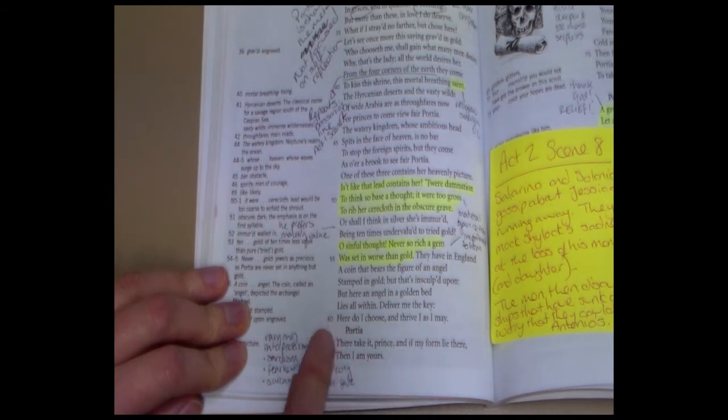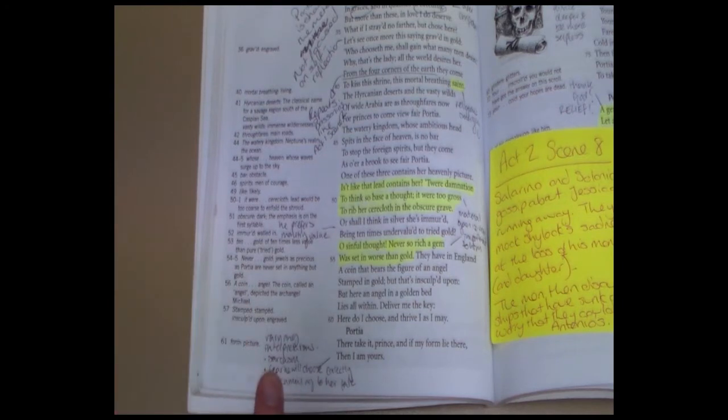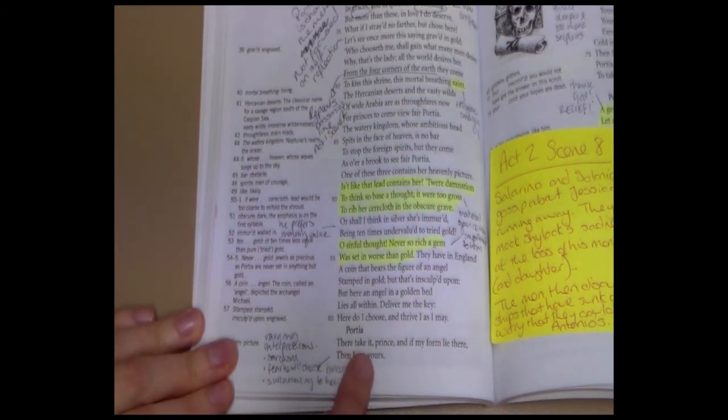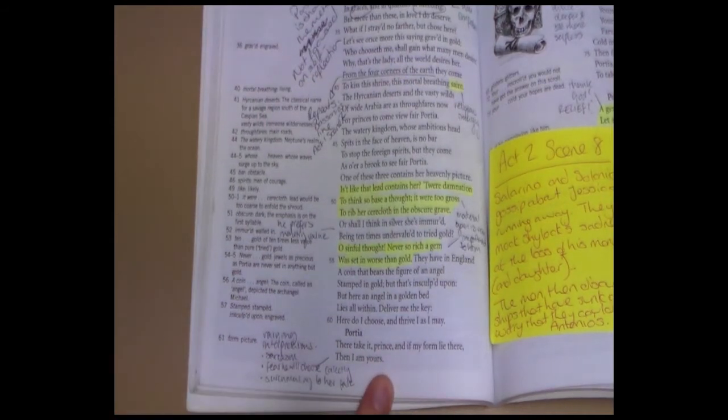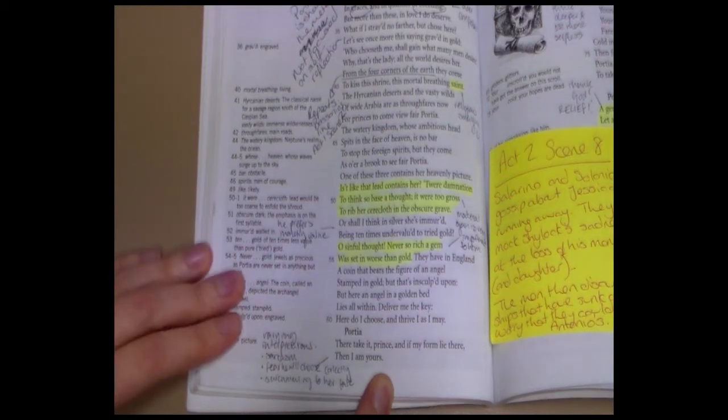At which point Portia does not try to stop him. She doesn't continue the conversation. She doesn't elongate this process. She says, take it, prince. And if my form lie there, then I am yours. Now, there are varying interpretations of that. Perhaps she is succumbing to her fate. Perhaps she's fearful that he will choose her. And perhaps she just wants it to be over with quickly.